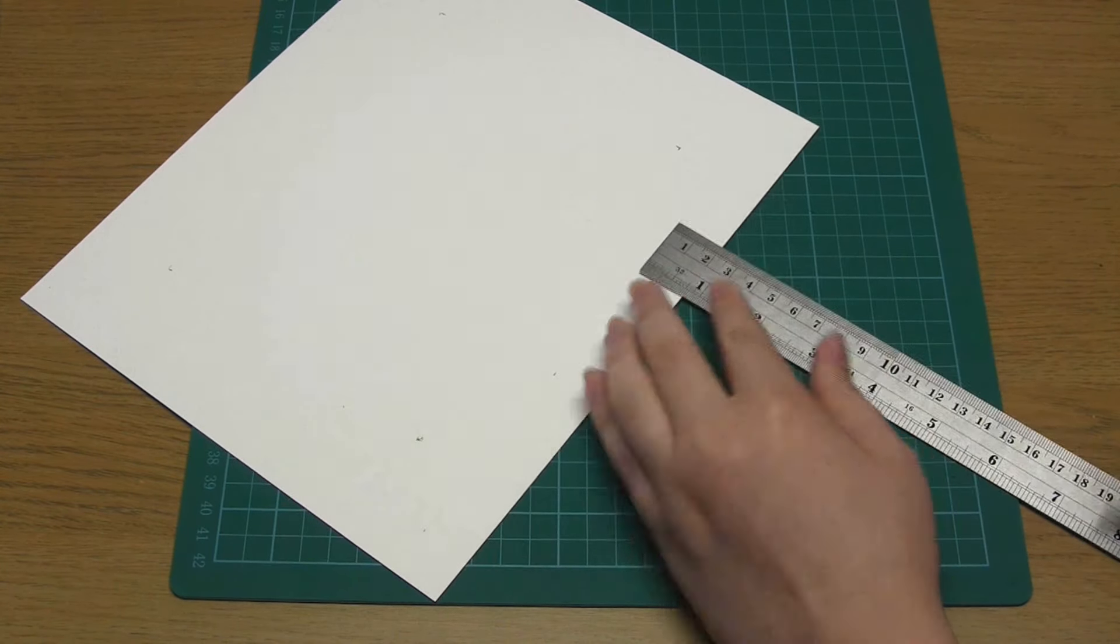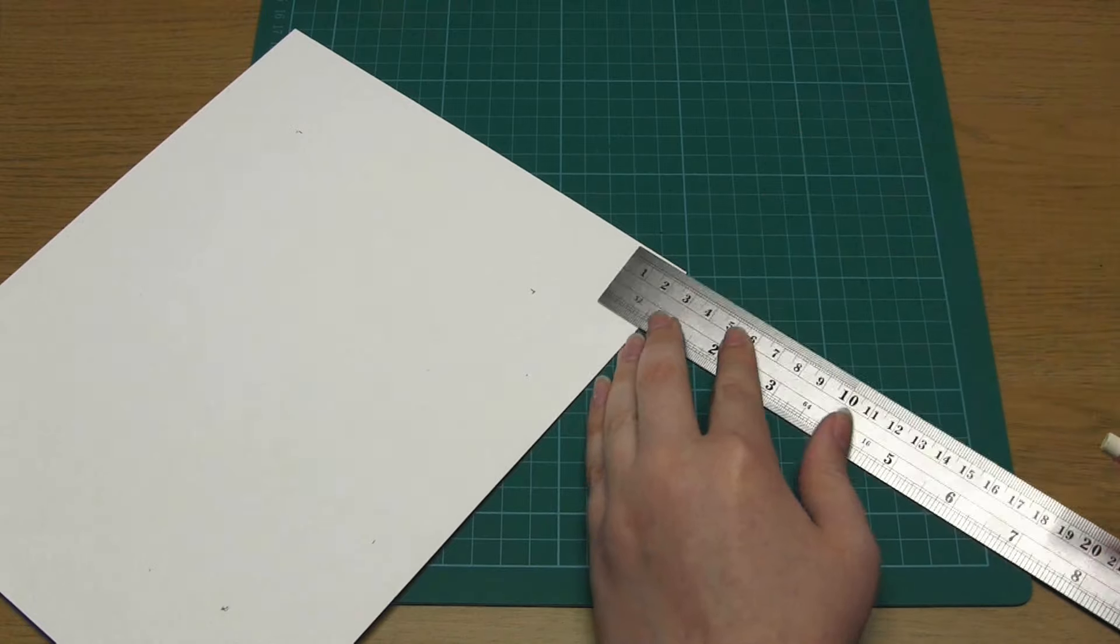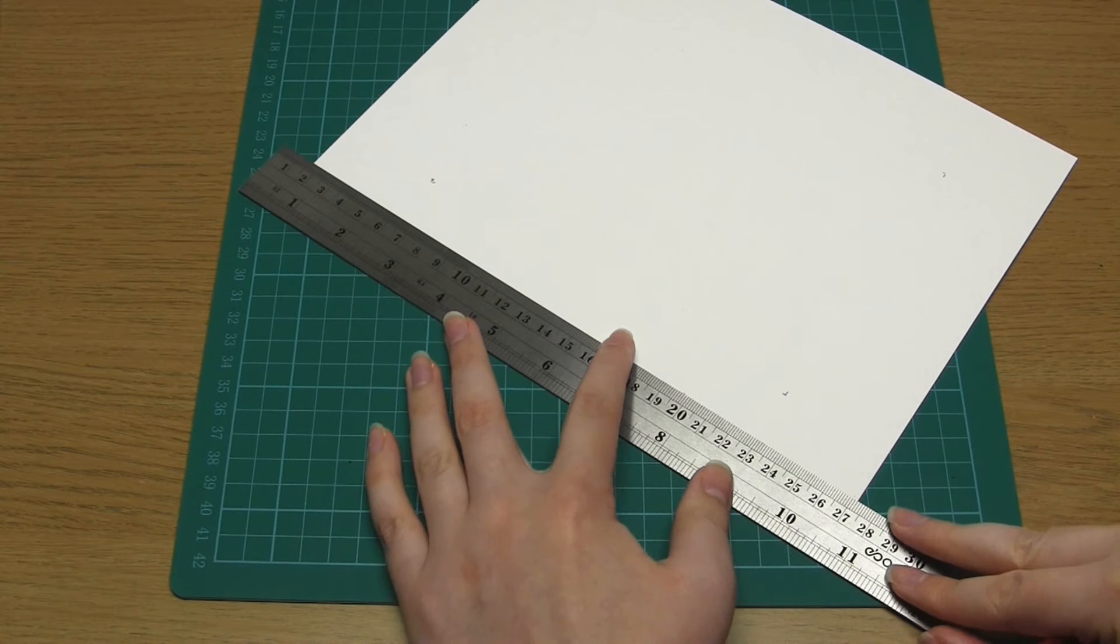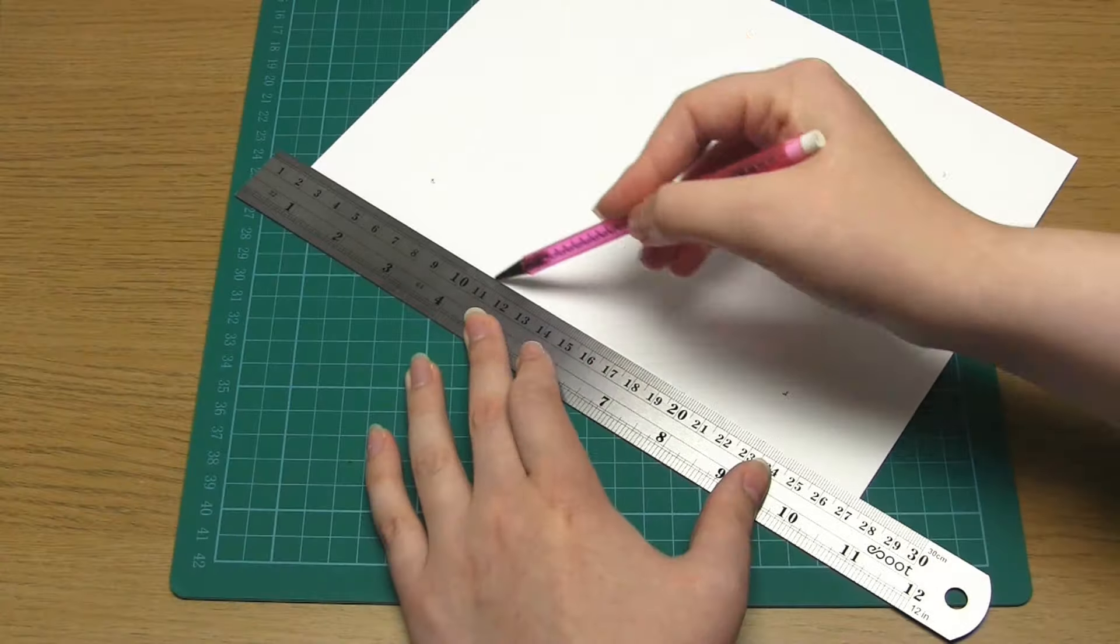Next, you need to measure one centimeter and two centimeters away from each of the edges of the card, and then draw lines at these points.